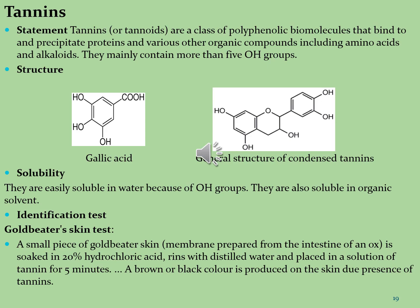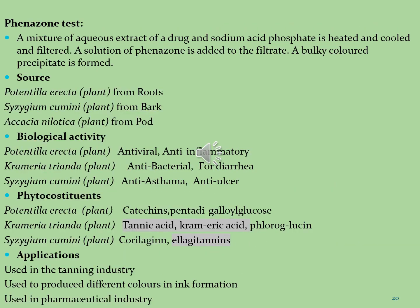Due to the presence of hydroxyl groups in tannin molecules, these are easily soluble in water and in organic solvents including methanol, ethanol, butanone, ethyl acetate and propanol. The gold beater skin test: a piece of gold beater skin soaked in 20% HCl, rinsed with water, placed in a tannin solution for 5 minutes — a brown or black color indicates tannins. The phenazone test: aqueous extract with sodium acid phosphate is heated, cooled, filtered, then phenazone solution added — a bulky colored precipitate indicates tannins.